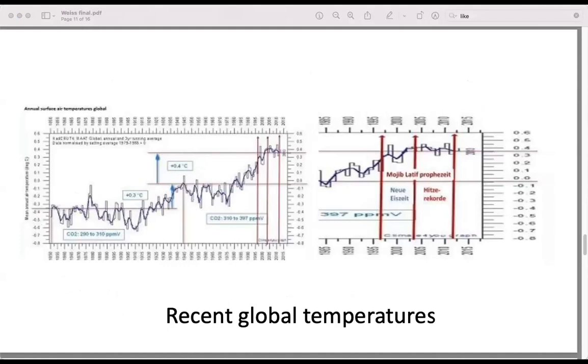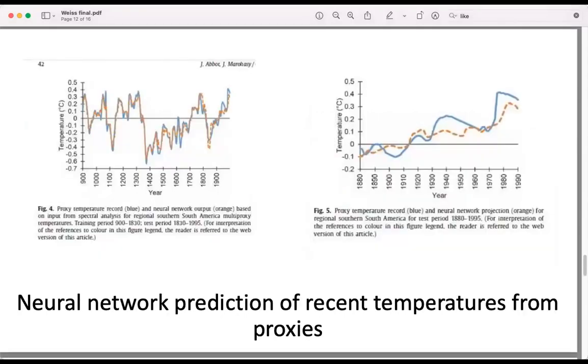This is similar work from some Australian colleagues, which used a different analysis method. The method we used was looking for cycles, and they used what is called neural networks, which are basically programs that can recognize patterns. They took measurements from the past until the year 1850 roughly, and they have software to find the patterns which are there. And with these patterns, then they calculated the temperatures from 1850 to now.